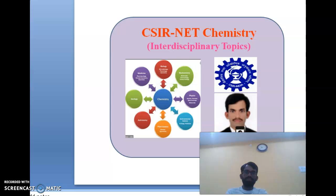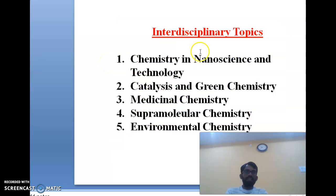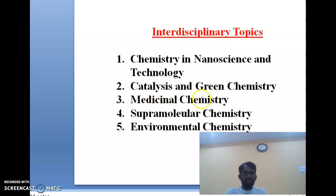The first interdisciplinary topic is nanoscience and technology. The second is catalysis and green chemistry. The third is medicinal chemistry. The fourth is supramolecular chemistry. And the fifth is environmental chemistry. These are the interdisciplinary topics of CSIR NET Chemistry.